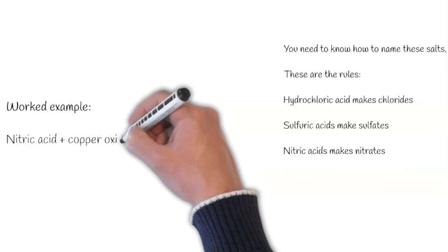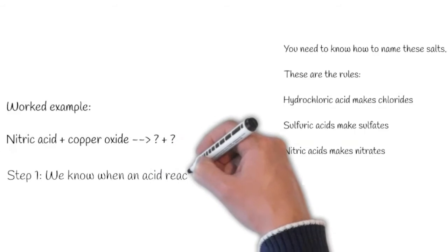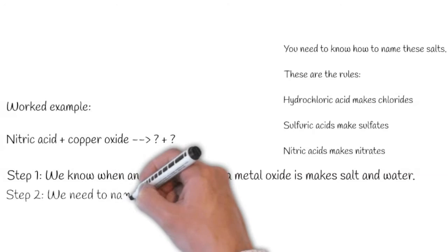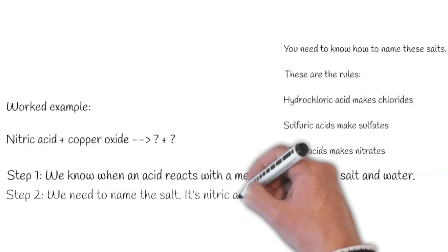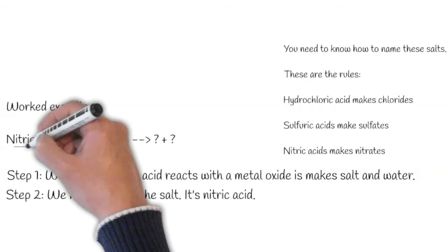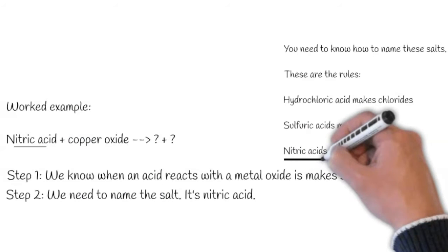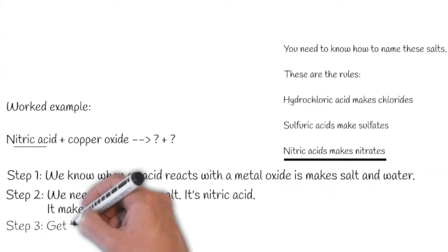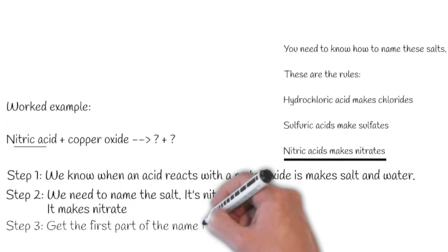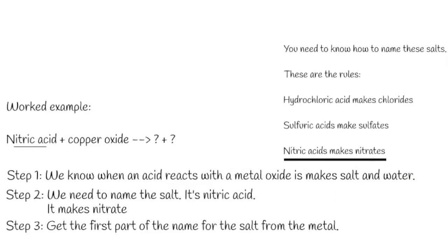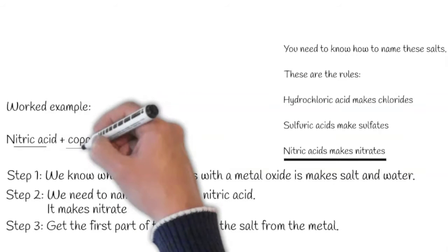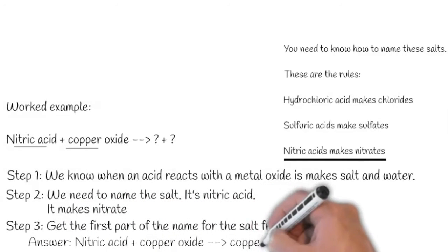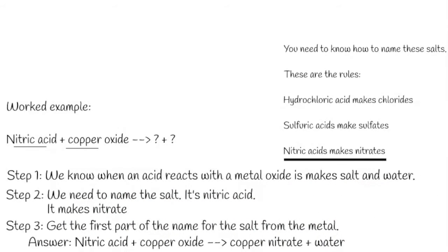Let's do another one. Nitric acid plus copper oxide makes what? We know that an acid reacts with a metal oxide to make salt plus water. We need to name this salt. It's a nitric acid, and if we look at our rules, a nitric acid makes a nitrate. Get the first part of the nitrate from the metal — it's copper oxide. So nitric acid plus copper oxide makes copper nitrate plus water.